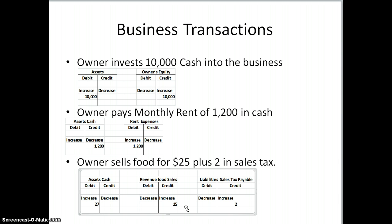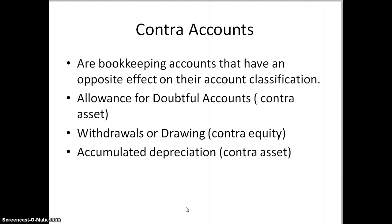The next topic is contra accounts. Contra accounts are special accounts that have an opposite effect of their account classification. For example, allowance for doubtful accounts is a contra asset — instead of having a normal debit increase, it has a credit increase; it works opposite. Withdrawals or drawings is an account used by the owner to take money out of the business — it's a contra equity account, and when the owner takes money out, it's debited, which decreases the equity in the business. The last one is accumulated depreciation, also a contra asset. We have an entire chapter on depreciation, so I'll save that for later.